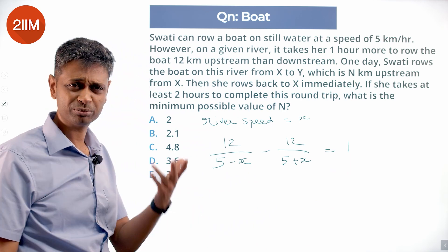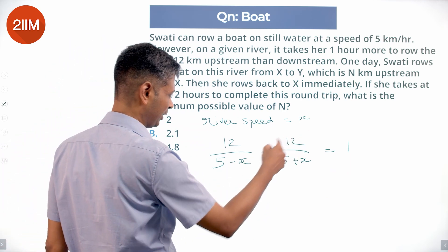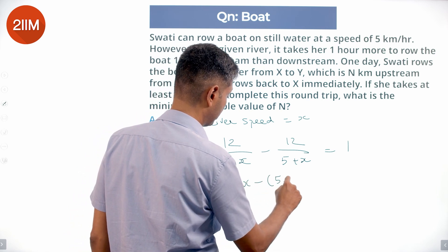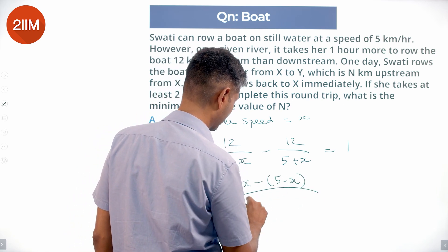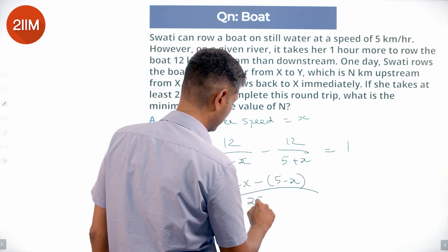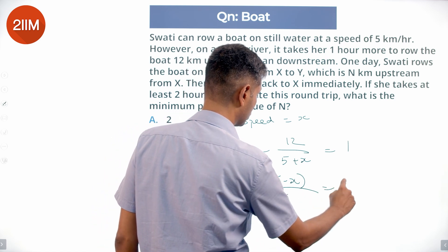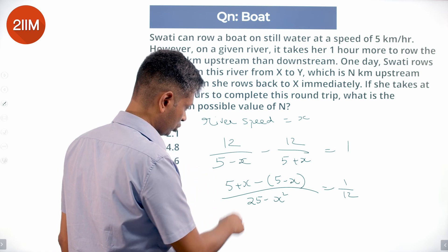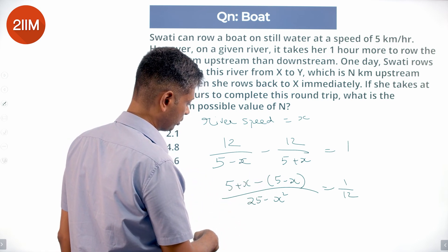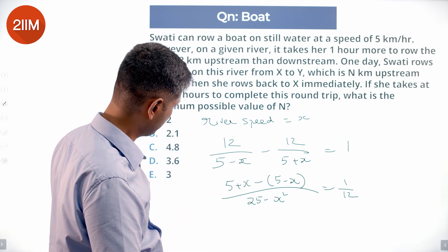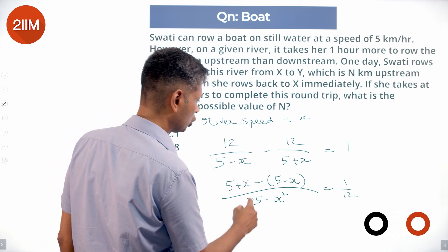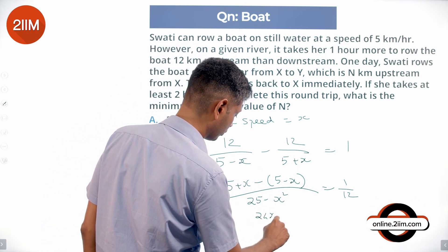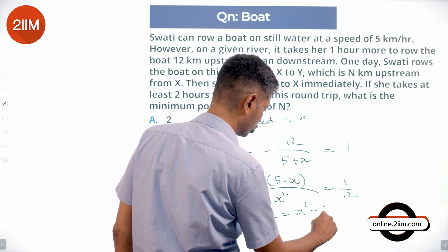We take the LCM and simplify. Taking 12 to that side: (5 plus X) minus (5 minus X), all divided by (25 minus X squared), equals 1 divided by 12. The numerator simplifies to 2X, so 2X into 12 gives 24X equals X squared minus 25.